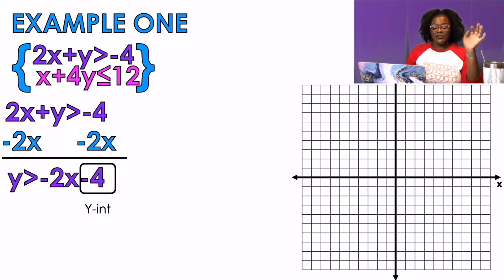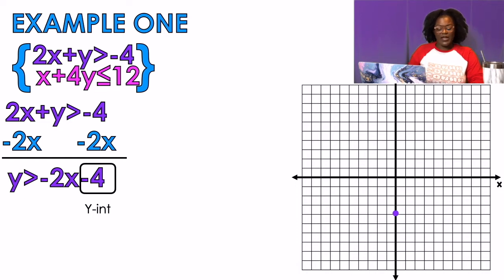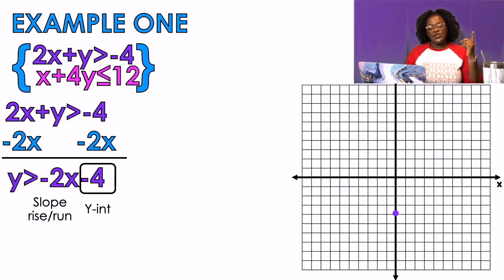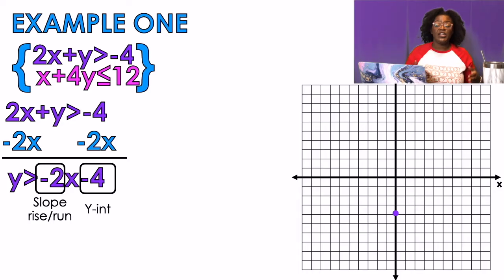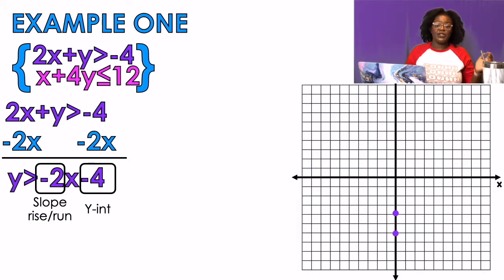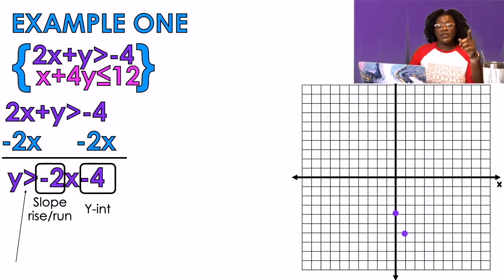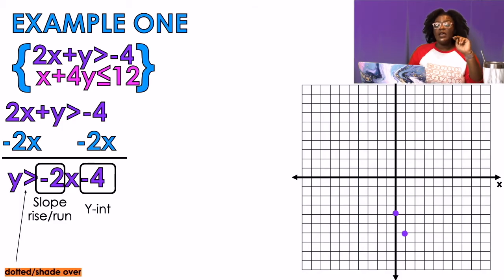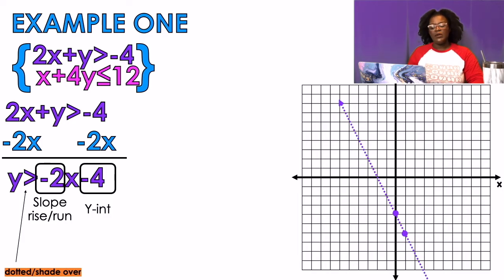My y-intercept is -4, so that's the first thing I plot on the graph. Then I use my rise over run — my slope is -2, so I write it as -2/1, meaning I go down two spaces and run over one space. My symbol is greater than, which tells me two things: it's a dotted line, and I shade over the line.